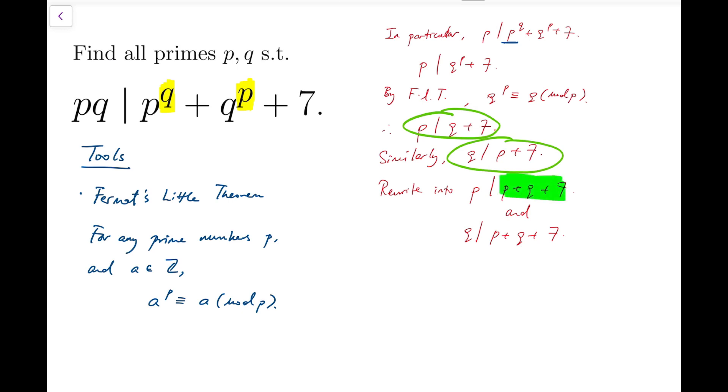Now, the special thing is, the dividend on both relations are now the same. So that means p plus q plus 7 is divisible by both p and q.